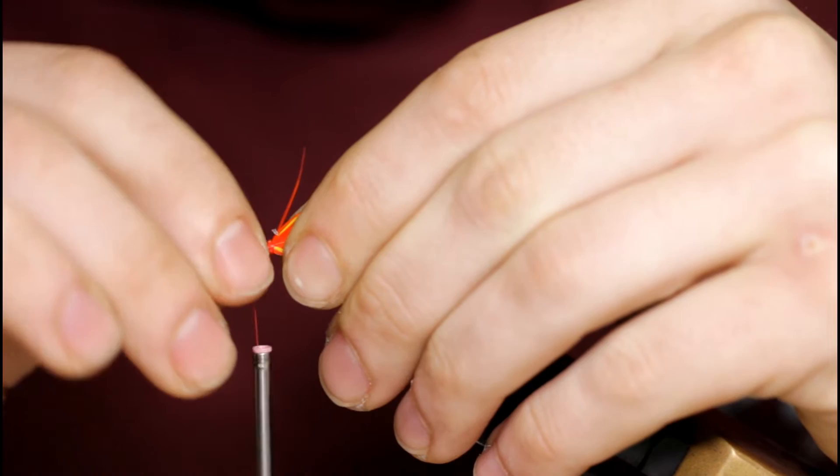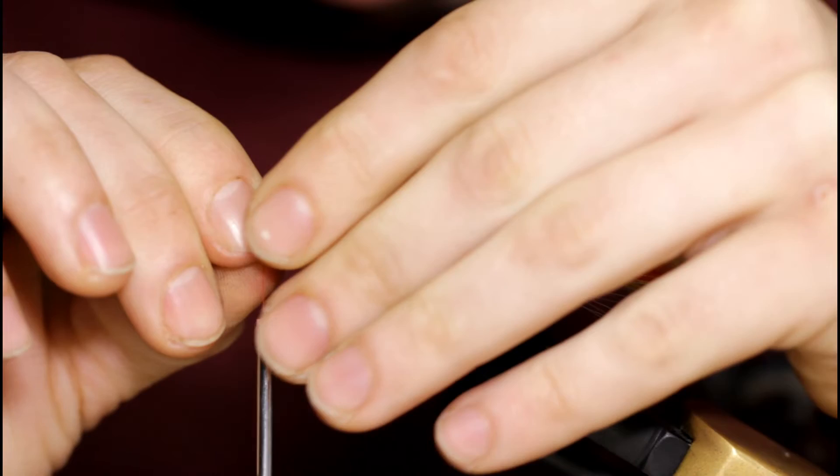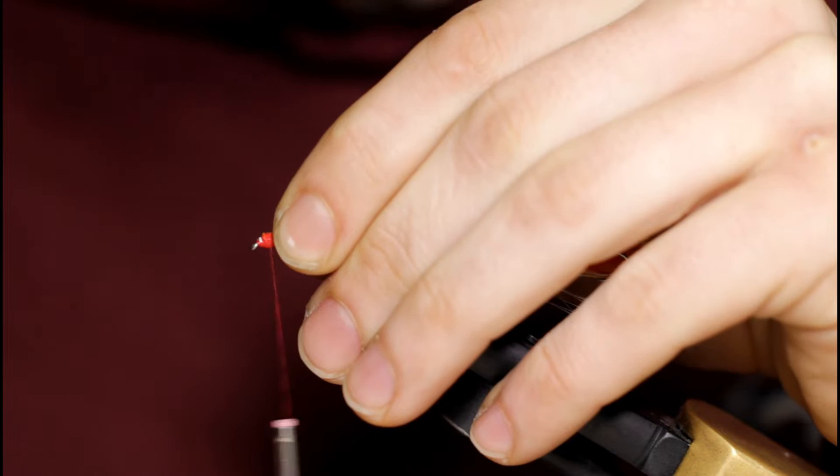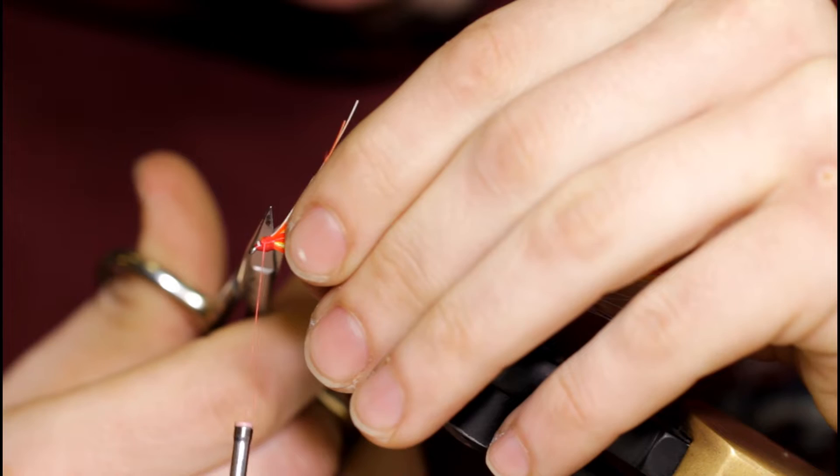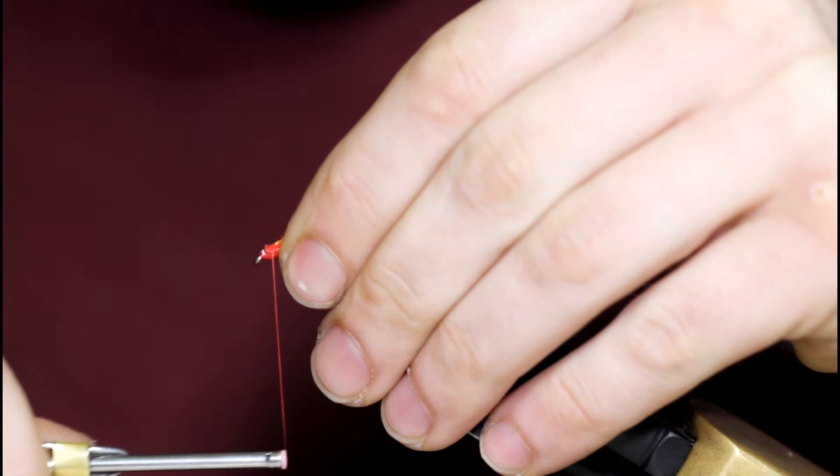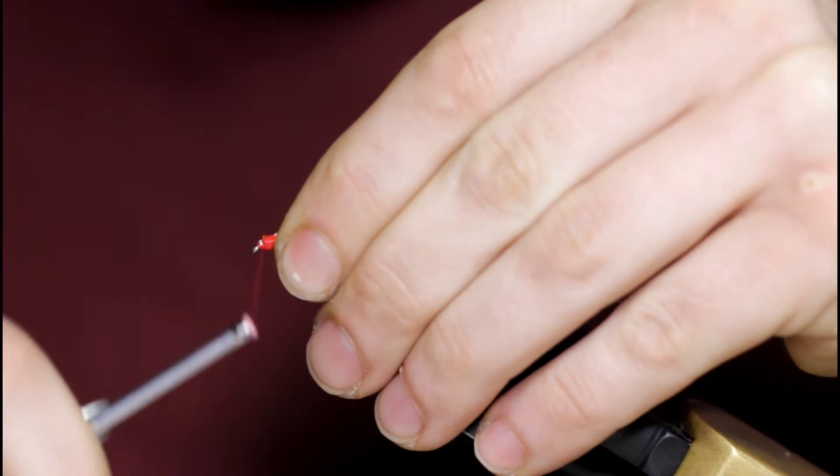And then I'm going to bend the stems up. So that the feathers don't pull out so easily. Just pinch them down. Take some turns over the top. Come in with my scissors. Snip off the stems.